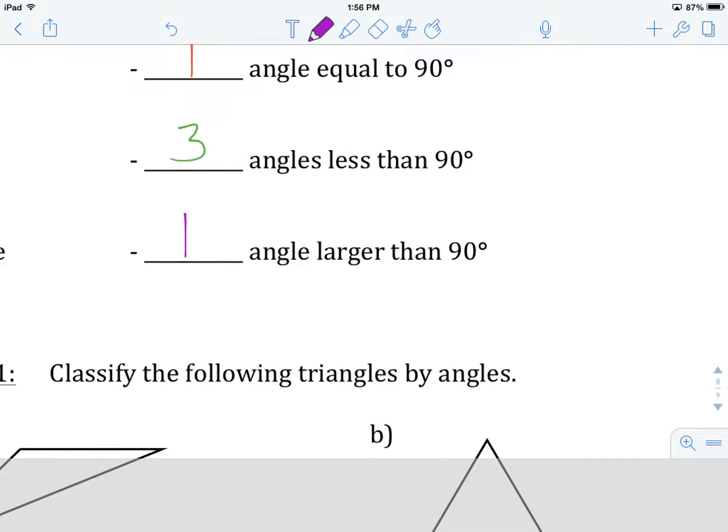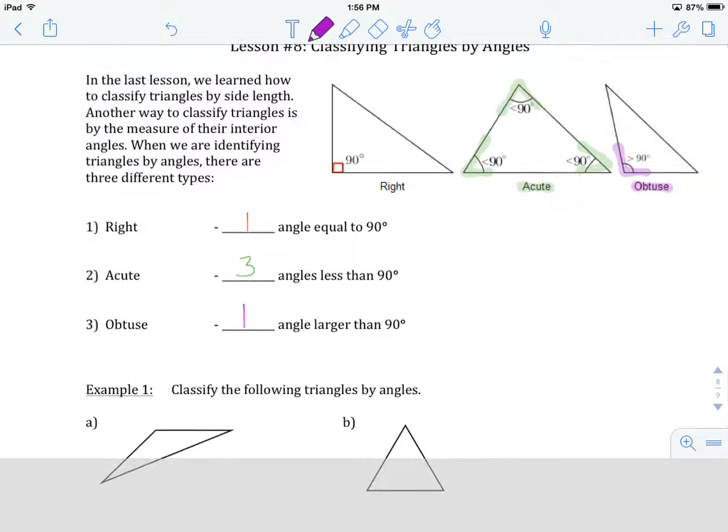Just to recap, a right angle triangle has one 90 degree angle in it. An acute triangle has all three interior angles less than 90, and an obtuse triangle has one angle that's larger than 90. We've got this at the top of the page here for your reference, but let's try some of this classifying on our own.